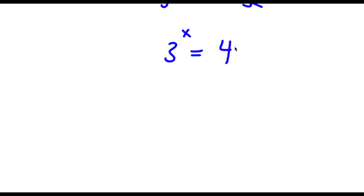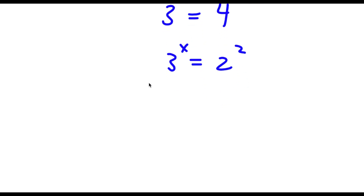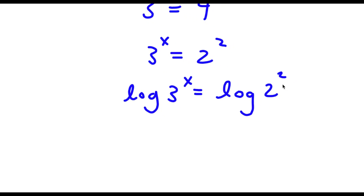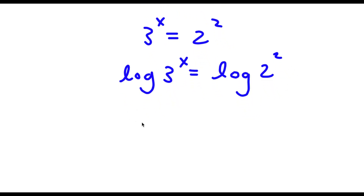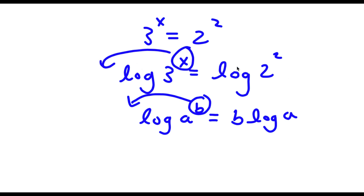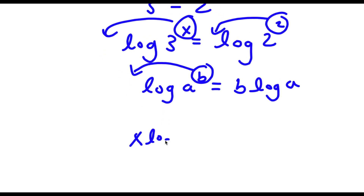Now 4 is the same thing as 2 to the power of 2. If I take the log on both sides, I have log 3 to the power of x is equal to log 2 to the power of 2. Using the rule that log a to the power of b equals b times log a, I can move x to the front and 2 to the front. So these equal x times log 3 and 2 times log 2.